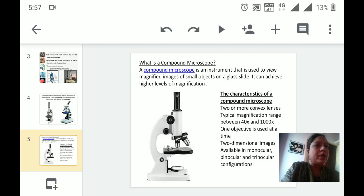First of all, what is a compound microscope? A compound microscope is an instrument that is used to view the magnified images of small objects on a glass slide. It can achieve a higher level of magnification. The main characteristics of a compound microscope are two or more convex lenses.